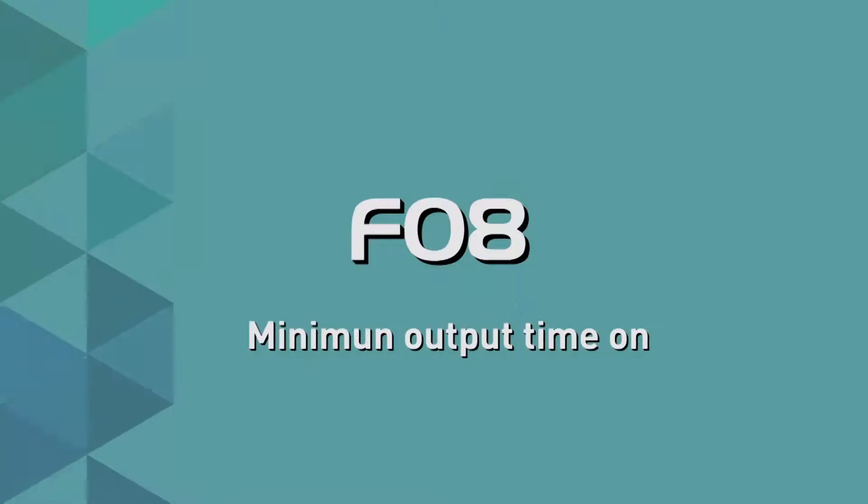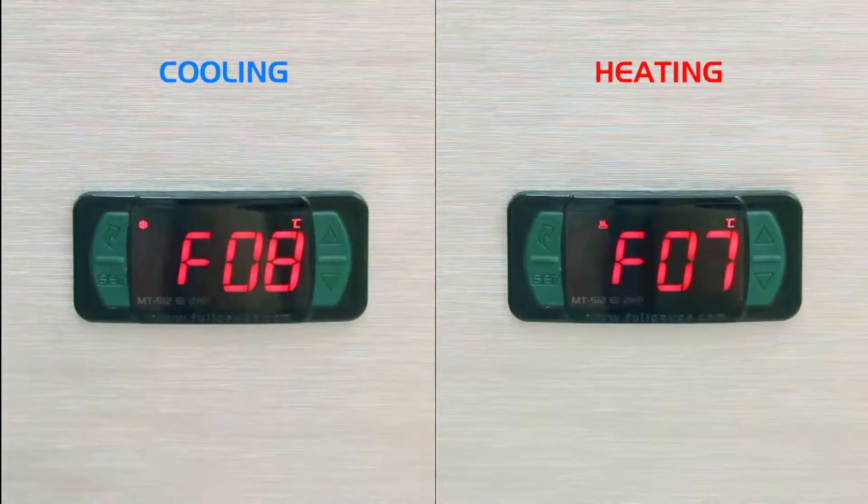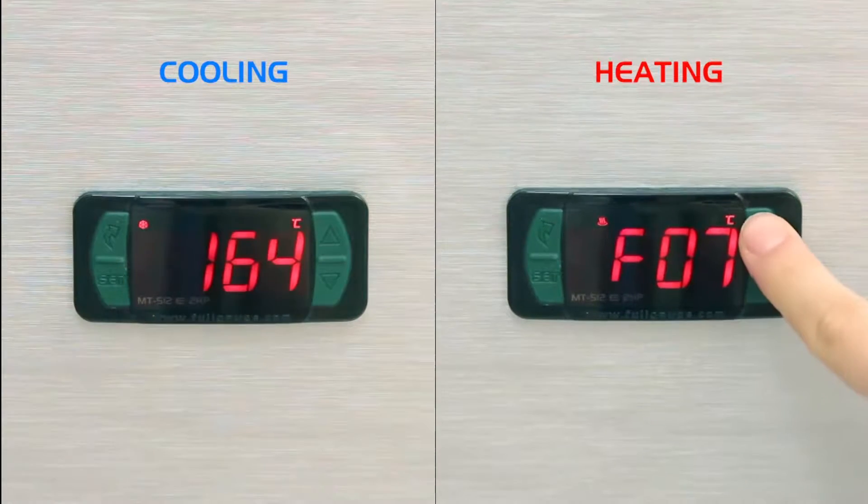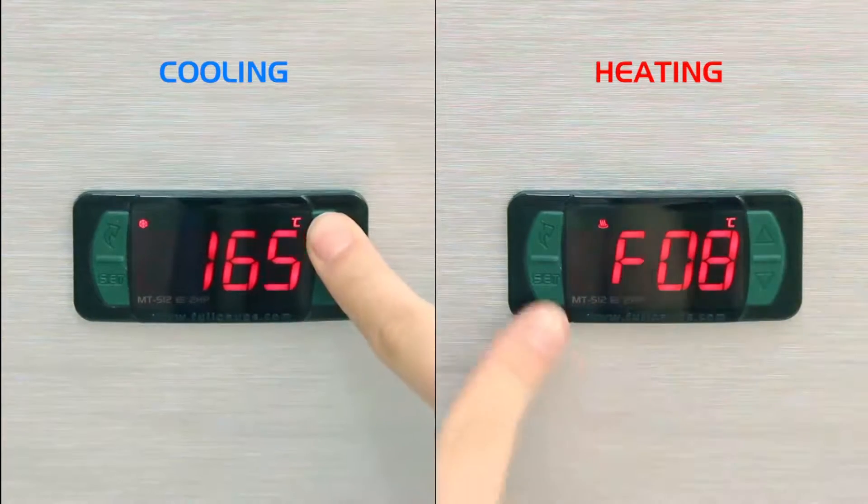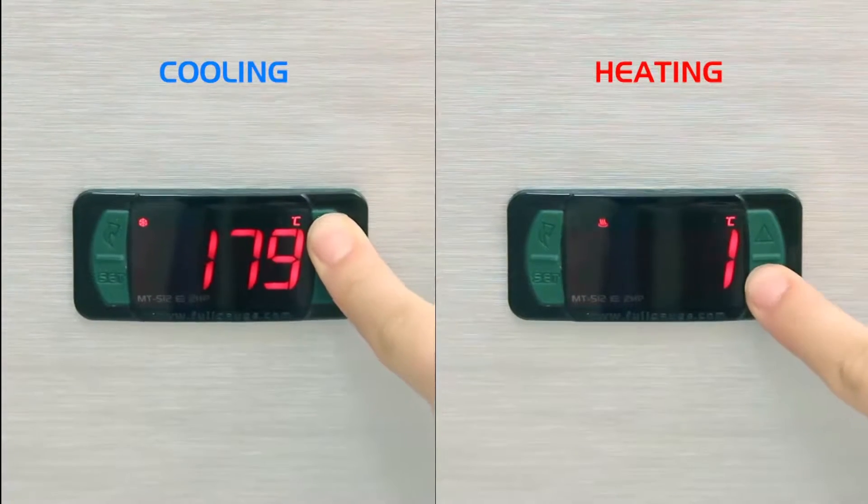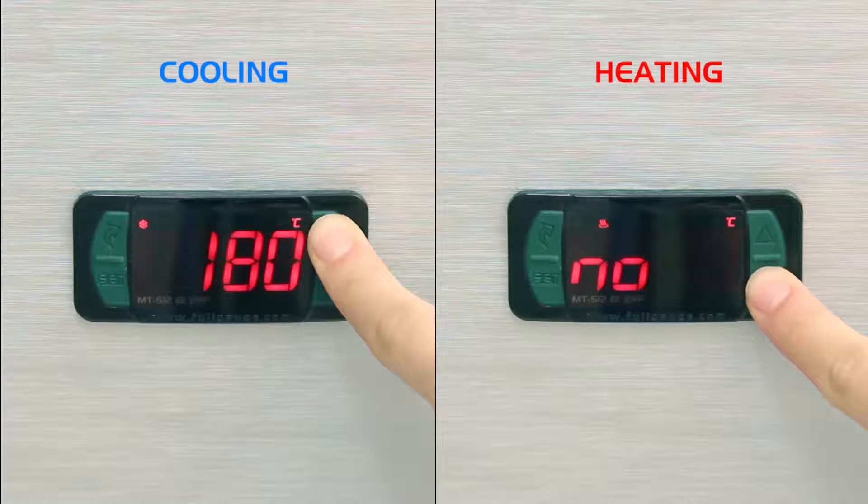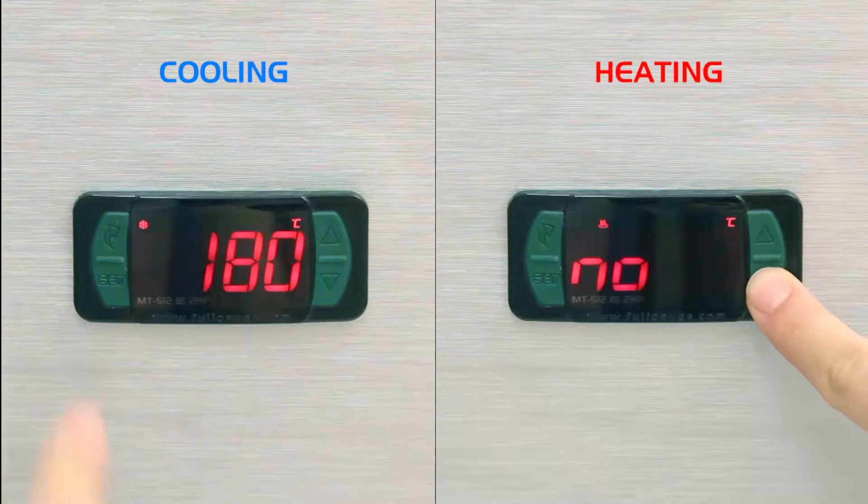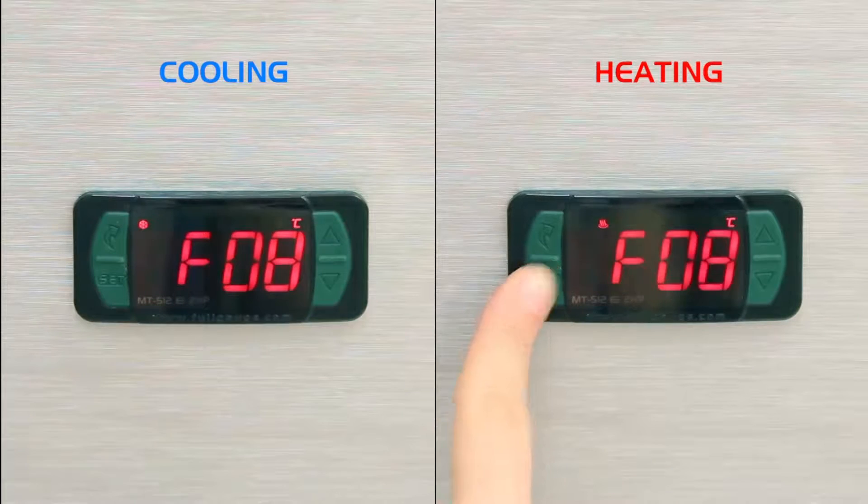F08, Minimum Output On Time. It is the minimum time in which the controller relay remains on after the last start. The goal is to avoid repetitive disconnections. In the cooling example, we opted for 180 seconds, and in the case of heating, we adopted a minimum time, selecting the No symbol.